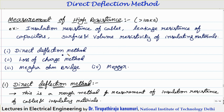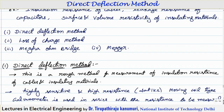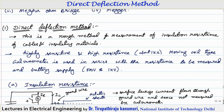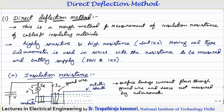Different methods used for measuring high resistance are the direct deflection method, loss of charge method, mega ohm meter bridge method, and MEGR. We are going to discuss each one of them in detail, and today's class we are going to discuss about the direct deflection method.